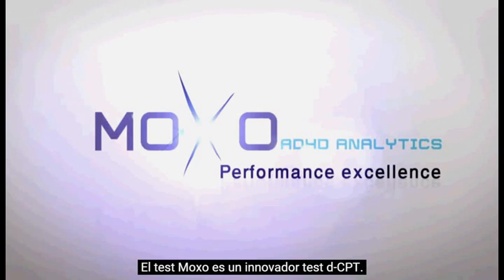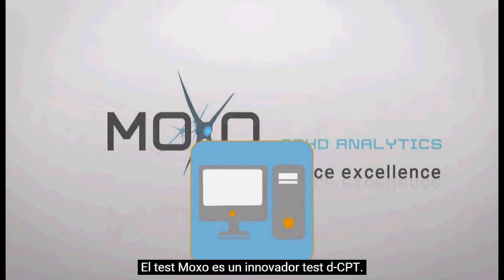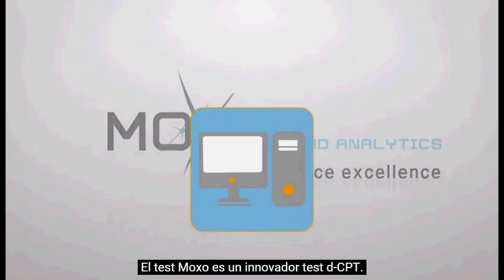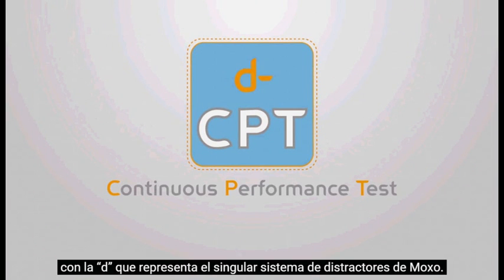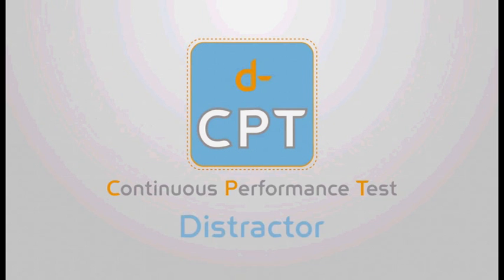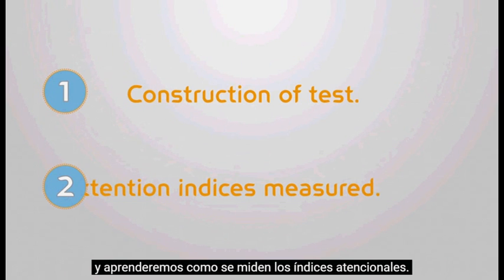The MOXO test is an innovative DCPT test. At its core, it is a continuous performance test, CPT, with the letter D representing MOXO's unique distractor system. In this short film, we'll explore how the test is constructed and learn how the attention indices are measured.